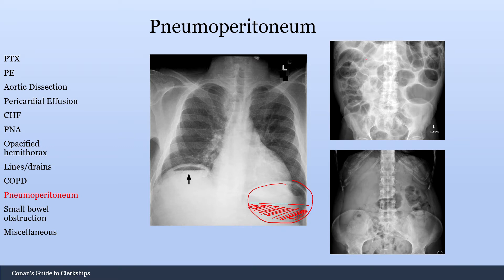This is another sign right here. This is an abdominal x-ray, and this is called Rigler's sign, which is also a sign of pneumoperitoneum. You can see this increased contrast of the bowel wall. This is a normal abdominal x-ray down here. The reason you have this increased contrast is because you have air improving the contrast, so you get this more brightly lit up bowel wall here.